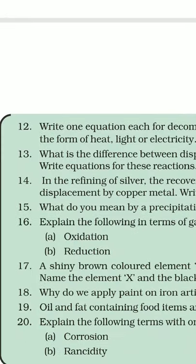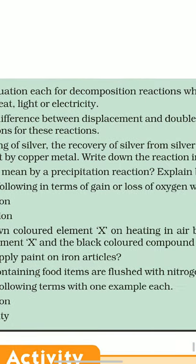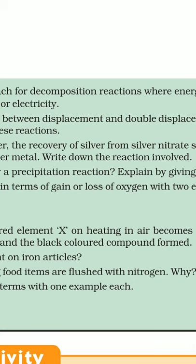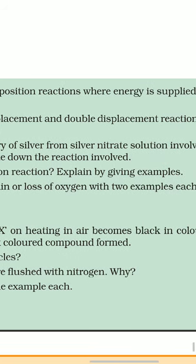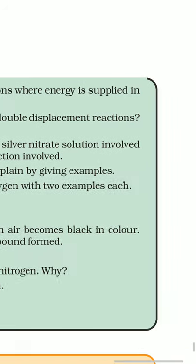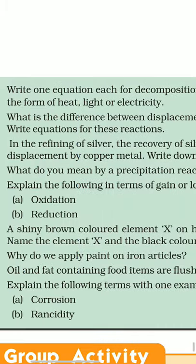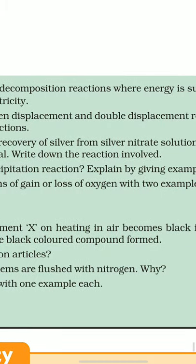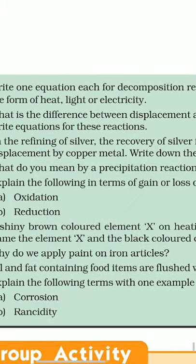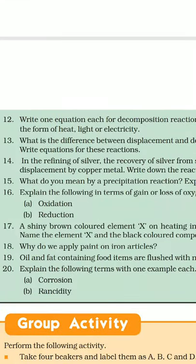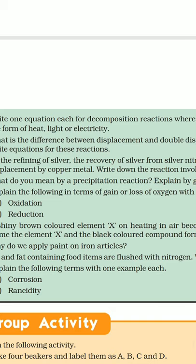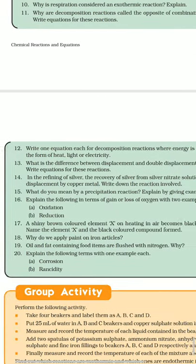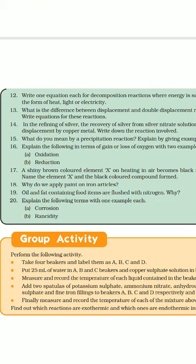Next question: A shiny brown colored element X on heating in air becomes black in color. Name the element X and the black colored compound formed. The element X is copper and the black colored compound formed is copper oxide. 2Cu plus O2 arrow mark 2CuO.